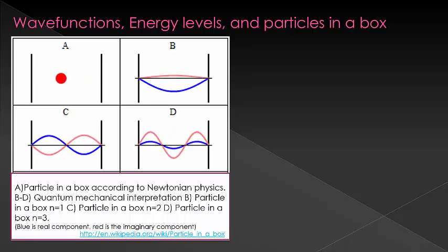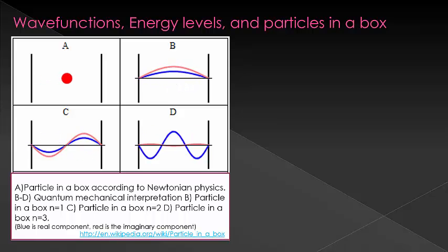For instance, in B, you only have one length over the whole box. That's lower energy than C, where you get two wavelengths, or lower energy than D, where you have three wavelengths.